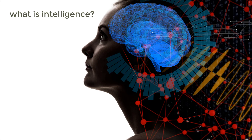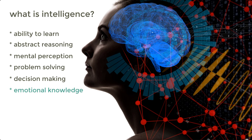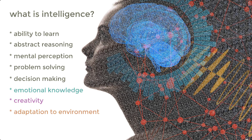As of now, intelligence has been defined in many ways such as the ability to learn, higher-level abilities including abstract reasoning, mental perception, problem-solving, and decision-making. Intelligence is not just limited to that — it also covers emotional knowledge, creativity, as well as the adaptation to meet the demands of the environment effectively.